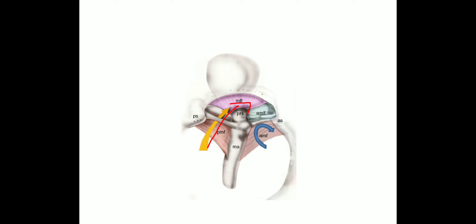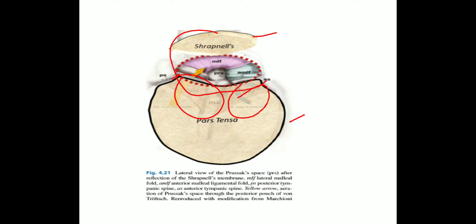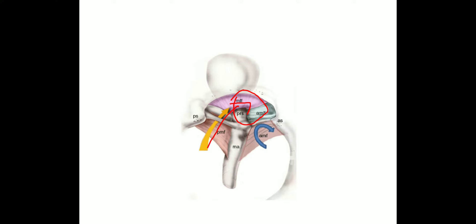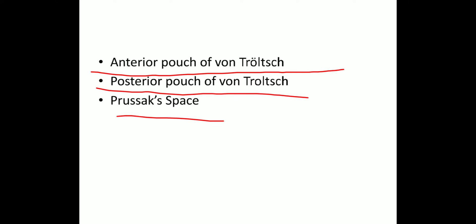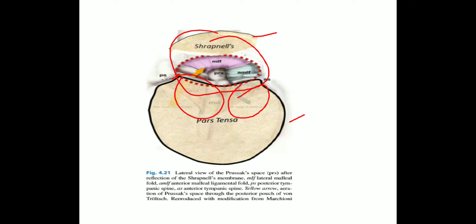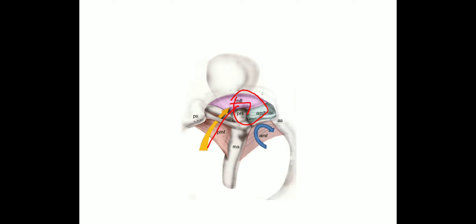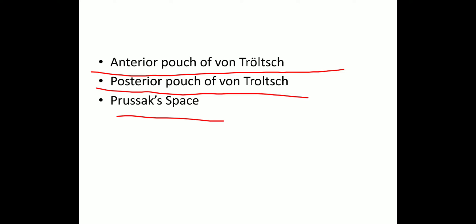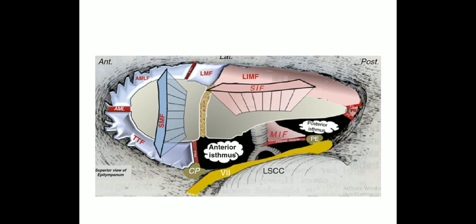The posterior pouch of von Tröltsch communicates superiorly with the Prusak space, which lies between the pars flaccida and the neck of the malleus. The lateral boundary of the Prusak space is the pars flaccida, and the floor is formed by the neck of the malleus. Posteriorly, the Prusak space communicates with the posterior pouch of von Tröltsch. It also has a roof and an anterior limit. The ventilation of the Prusak space is through the posterior pouch of von Tröltsch.